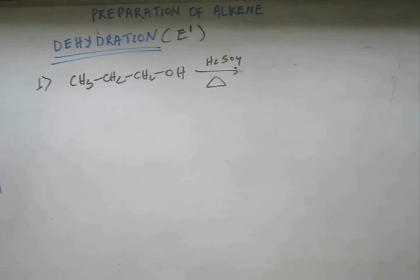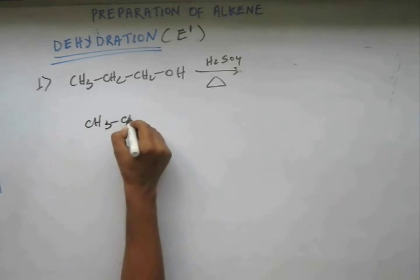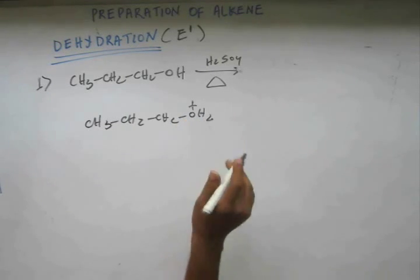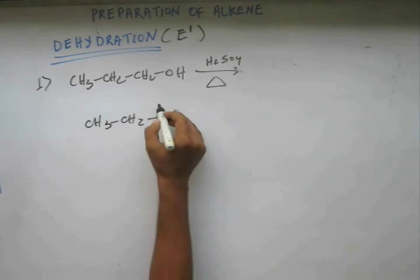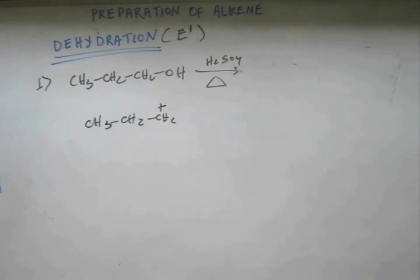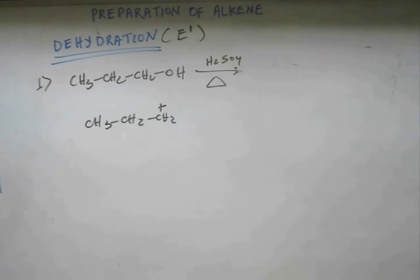The first step will be protonation. H+ would be coming out of this H2SO4 getting protonated on this alcohol. This is the protonated alcohol step number one. Step number two, this water will be removed off. So there will be a carbocation formed. Now before step number three can happen, before acid-base reaction can happen, if there is a possibility of migration, of rearrangement, of stabilizing this carbocation further, there always will be a stabilized carbocation on which acid-base reaction will occur.